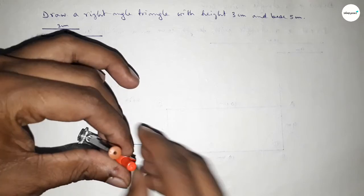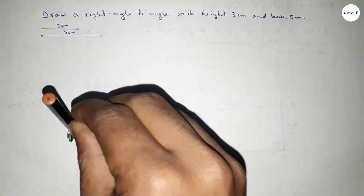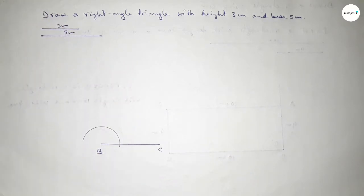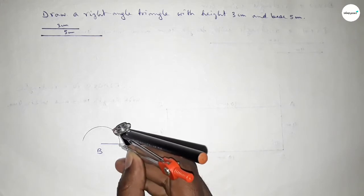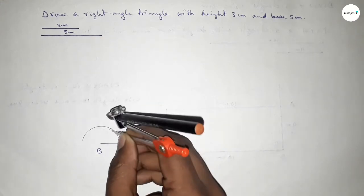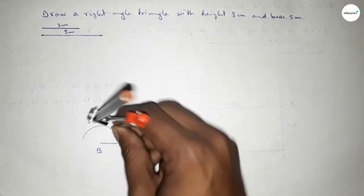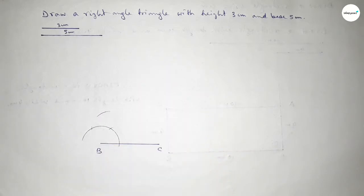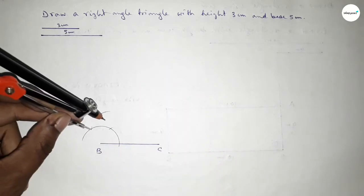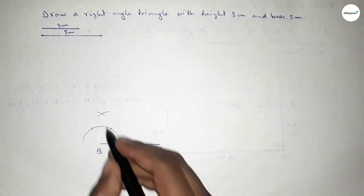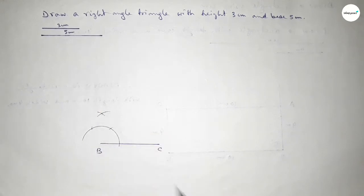Putting the compass on point B and drawing an arc, then placing the compass at the arc intersection and cutting with the same length. Repeating this step — placing the compass and cutting again with the same length — so that both curves intersect at a point.